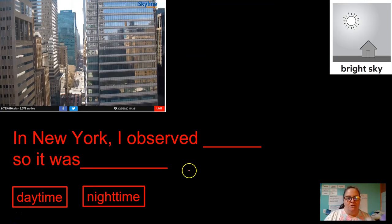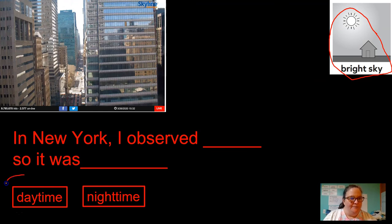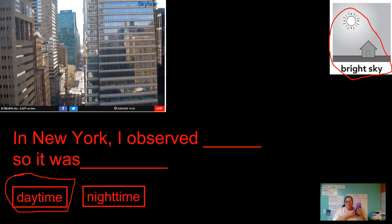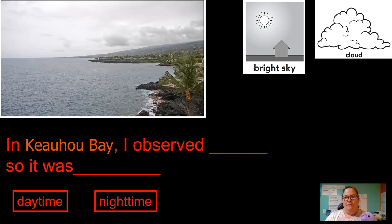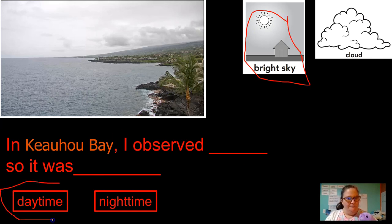And New York is bright sky, and that's daytime. Okay, here's our last one. In Kealho Bay, bright sky, and that means it's daytime. In Kealho Bay, I observed bright sky, so it's daytime. We did it! Yay!